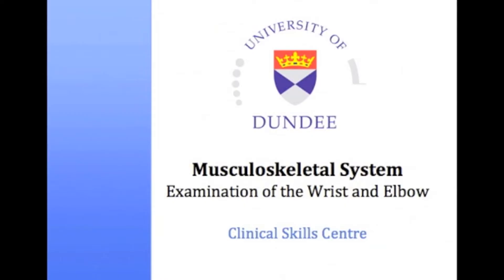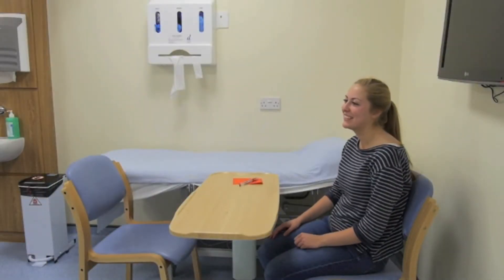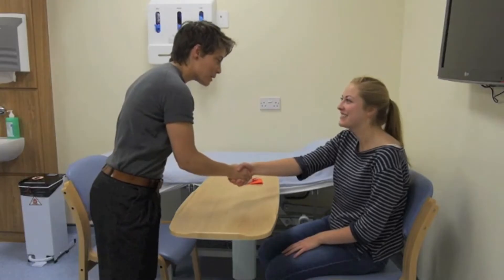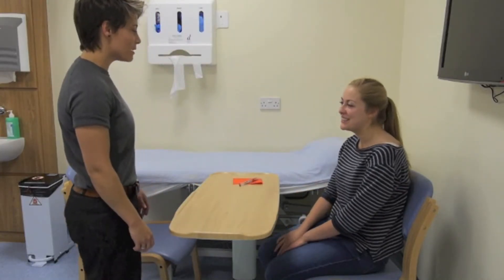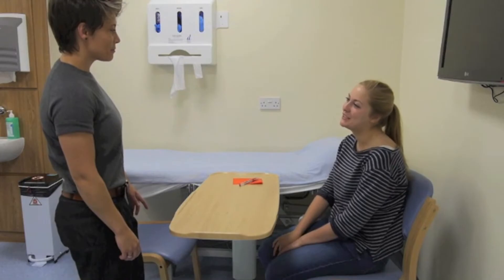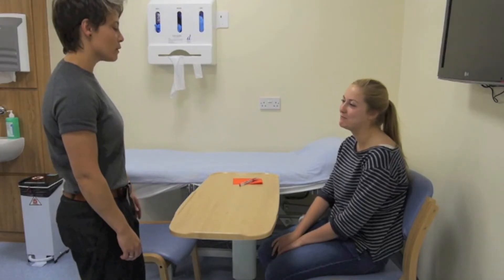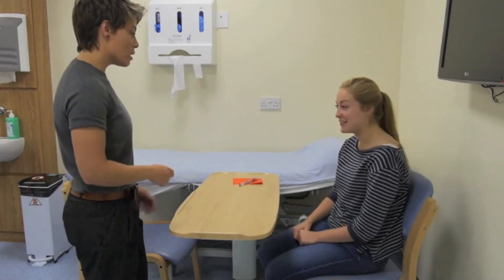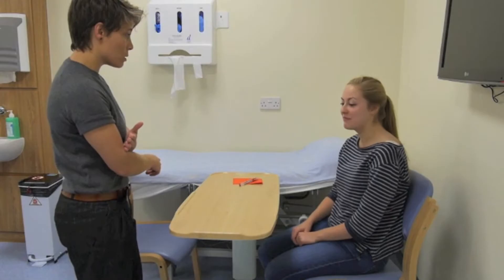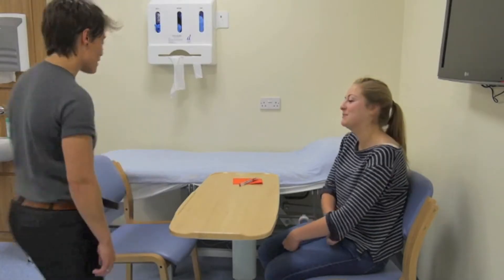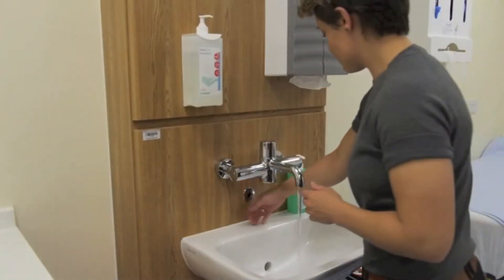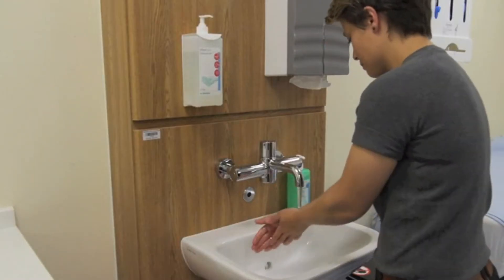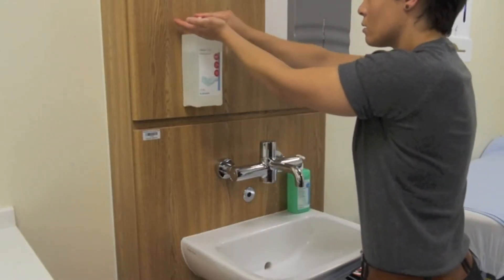Welcome to the University of Dundee Orthopaedic Clinical Skills video for examination of the wrist and elbow. Upon entering the room, introduce yourself and confirm the patient's name and date of birth. Explain what the exam involves and obtain the patient's consent. Ask if they have any pain in their upper limbs. The arm should be exposed to the mid-humerous level. It is important to wash your hands thoroughly to prevent the spread of infection.